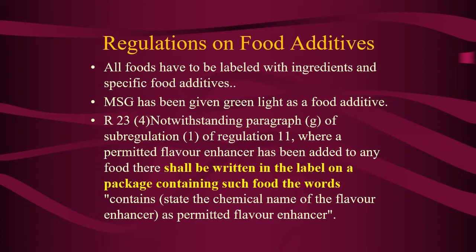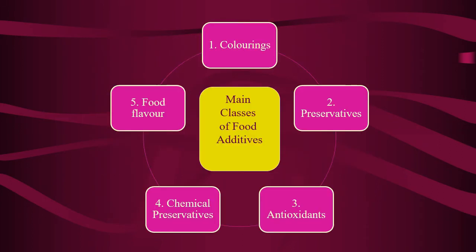In terms of labeling regulation, there are five main classes of food additives: the first is coloring, the second is preservative, the third is antioxidant, number four is chemical preservative, and number five is food flavor.